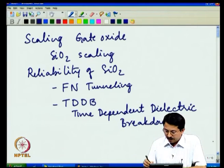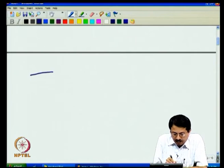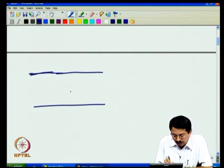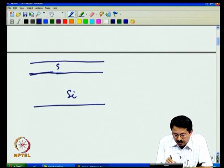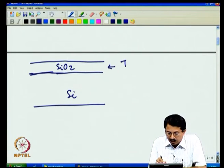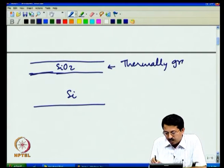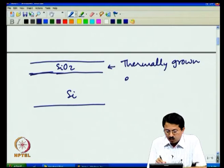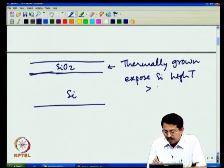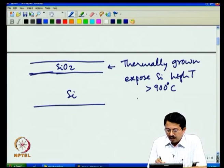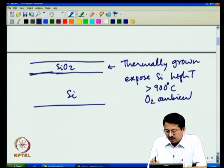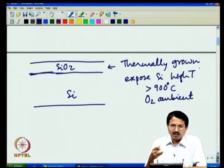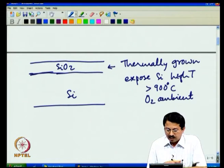Let us get started with understanding silicon oxide and the issues we are talking about. When we look at silicon and silicon oxide, this SiO2 is thermally grown. What it means is that you subject the silicon wafer to high temperature — greater than 900 degrees centigrade — and expose it to an oxygen ambient. This results in conversion of silicon into silicon oxide, as opposed to depositing something on top; we actually convert silicon into silicon oxide.